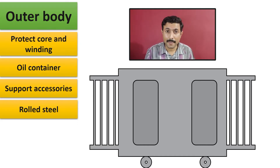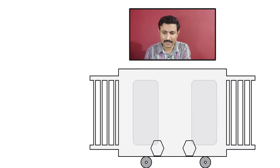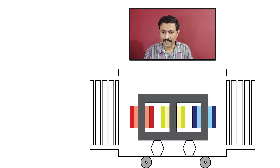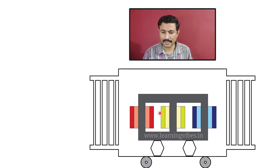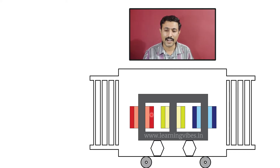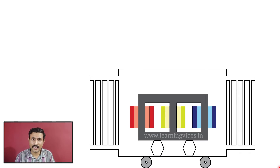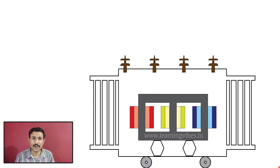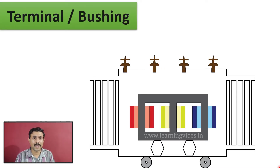If we remove the body and look inside, on the base a core and winding is mounted. Here we are using the example of a three-phase transformer. You can see the core material and there are three windings: R winding, Y winding, and B winding. The light red color represents LV winding of the R phase and dark red color represents the HV winding of R phase, and the same way for Y phase and B phase. Light color represents LV winding and dark color represents HV winding. To connect this internal winding or coil to the outer conductor, we require terminals or bushings, which are provided on the top of the transformer.